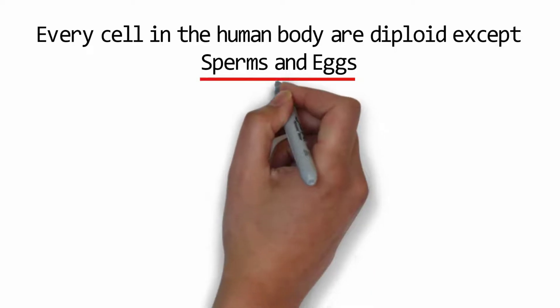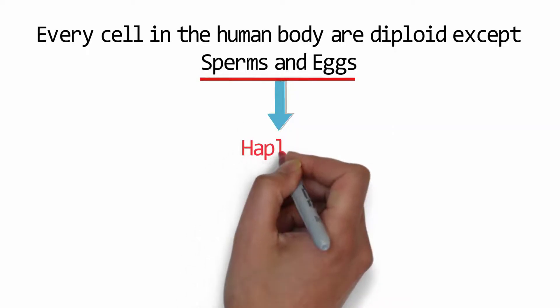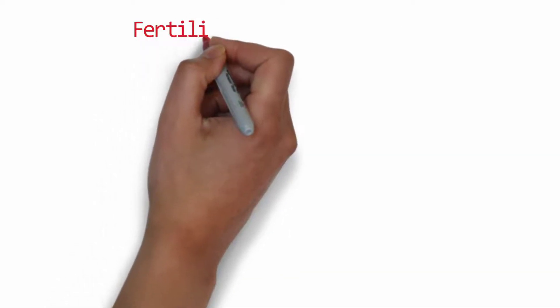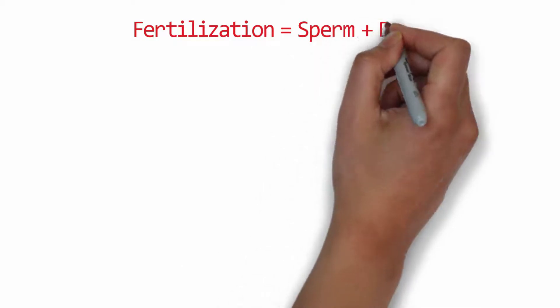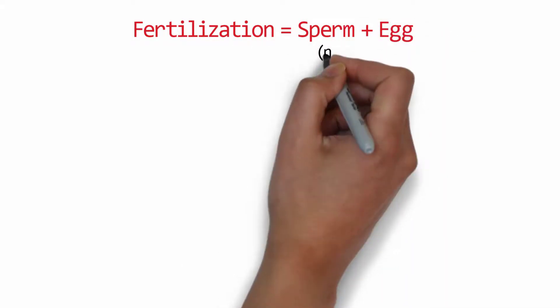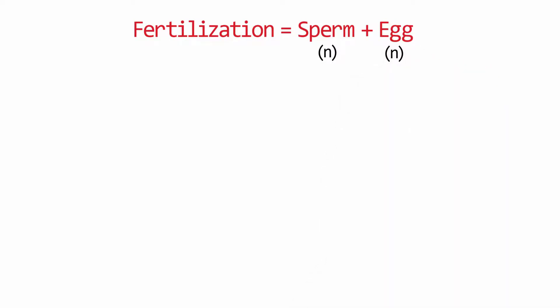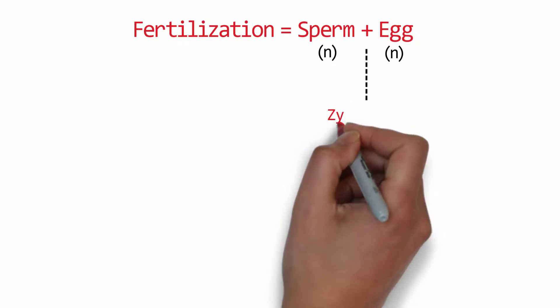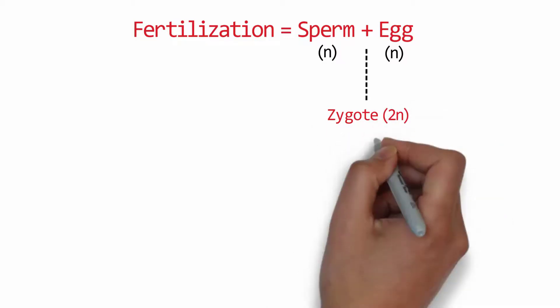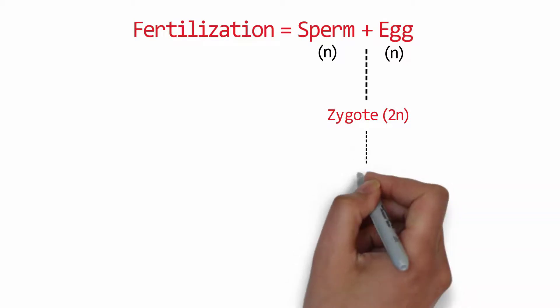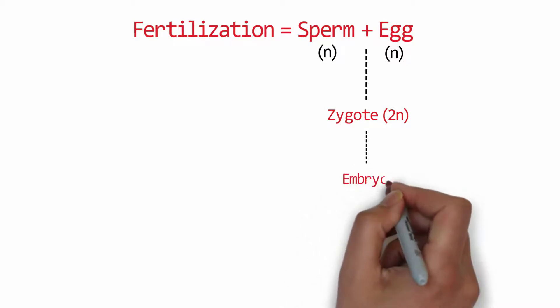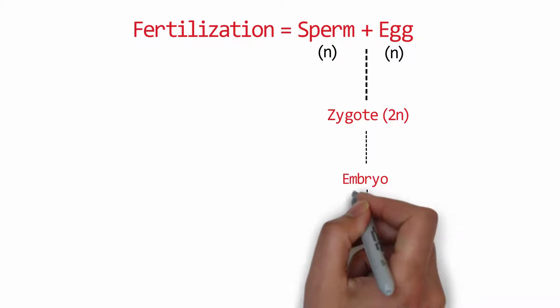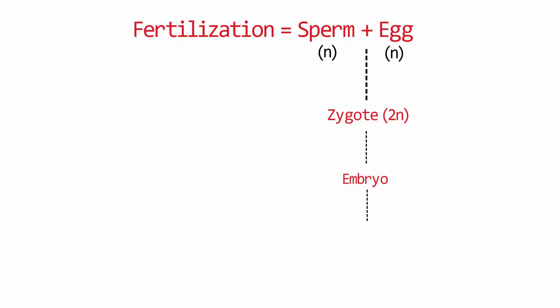So let us understand why sperm and eggs are haploid. When fertilization takes place, there is fusion of sperm and eggs. Sperm and egg are haploid in number, that is n and n, which fuse into a zygote. From that a fetus is born and a human baby is produced. The baby that we get, the human baby, is having diploid number of cells and hence is a diploid organism.